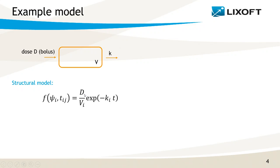It depends on the dose D, on the volume Vi, and the elimination rate Ki. The index i stands for the individuals. Each individual has its own Vi and Ki values, leading to a different prediction.